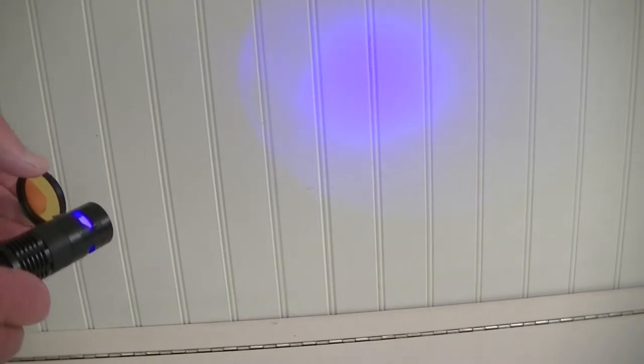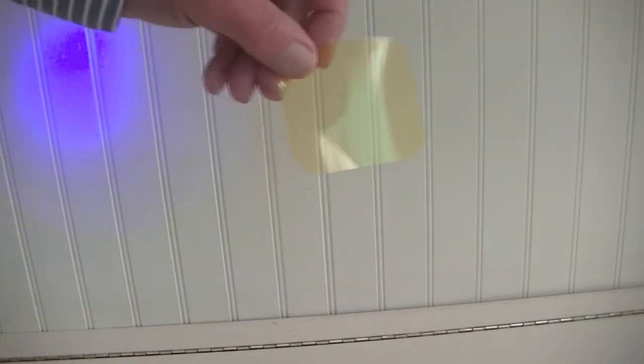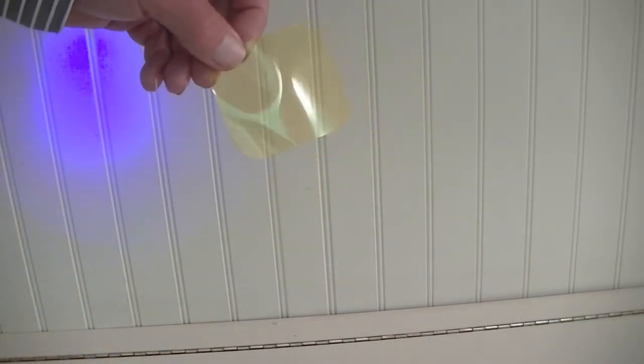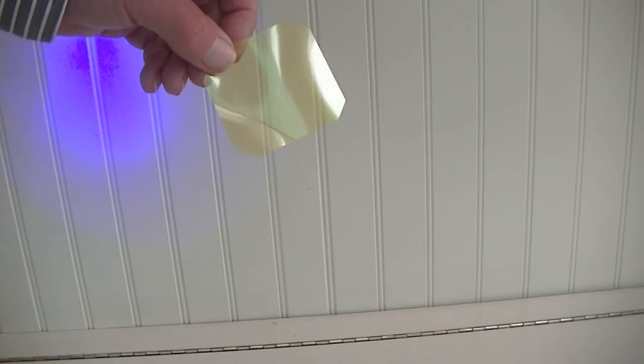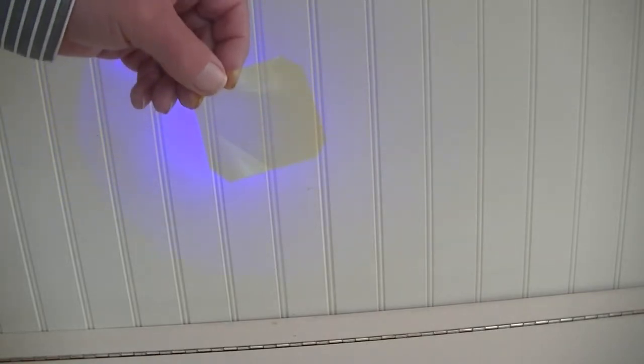Another source of yellow filter is celluloid filters. These are often rather pale, but if you can find a nice deep yellow filter you can cut that to shape. As we'll see, we need possibly different ways of attaching this to the microscope.